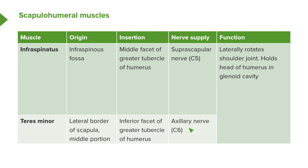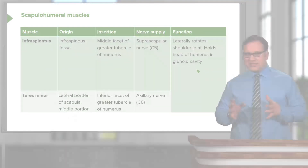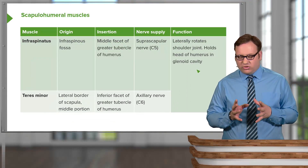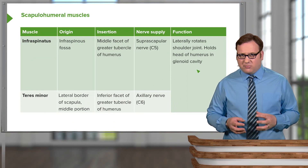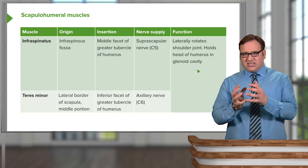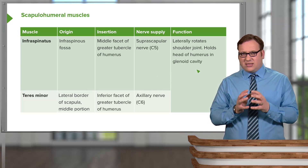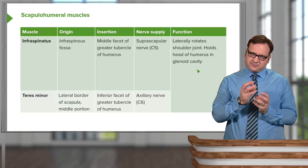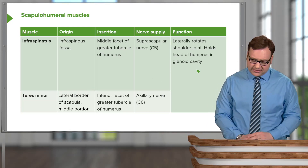Teres minor is innervated via the axillary nerve, which also supplies deltoid. Infraspinatus and teres minor help to laterally rotate the shoulder joint and hold the head of the humerus in the glenoid cavity. The glenohumeral joint is relatively weaker than the hip joint, allowing greater range of movement. What stabilizes the joint, alongside ligaments, are these muscles passing from the scapula to the humerus.